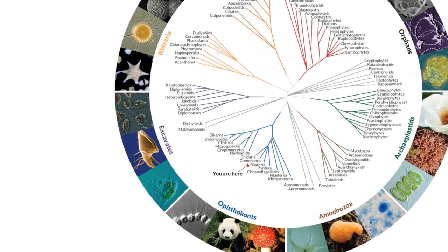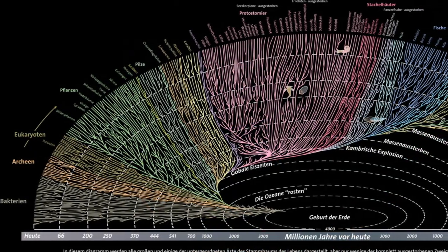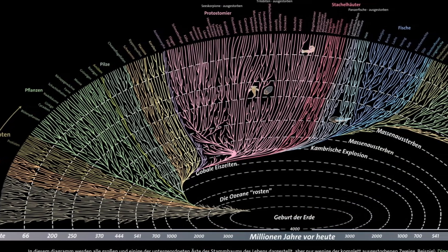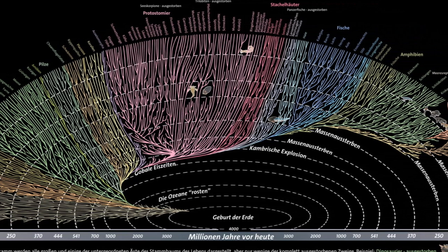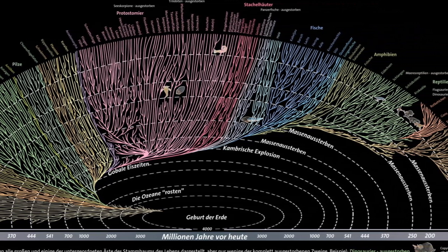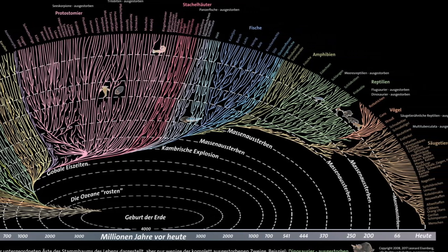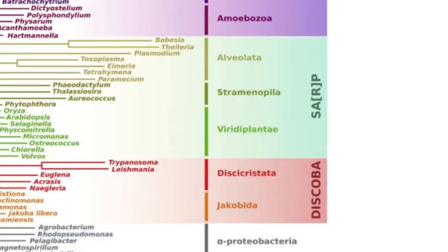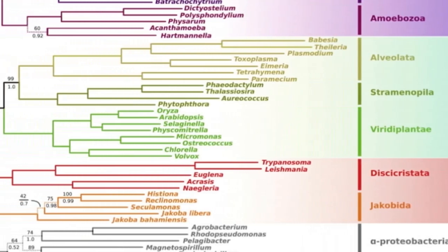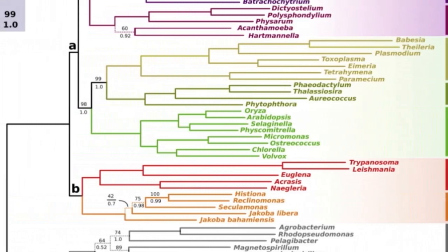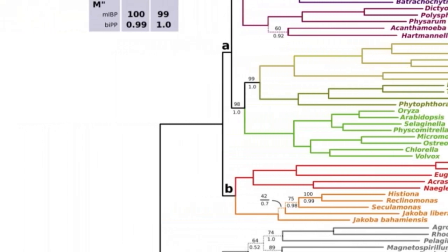But a new method called single-cell transcriptomics has revolutionized such studies. It enables researchers to sequence large numbers of genes from just one cell. Gordon Lax, another graduate student in the Simpson lab and an expert on this method, explained that for hard-to-study organisms like hemimastigotes, single-cell transcriptomics can produce genetic data of a quality previously reserved for more abundant cells, making deeper genomic comparisons finally possible.